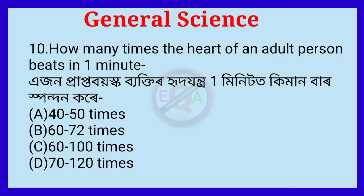Question number ten. How many times does the heart of an adult person beat in one minute? The correct option is Option C: 72 to 100 times.